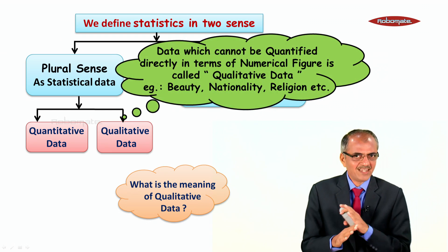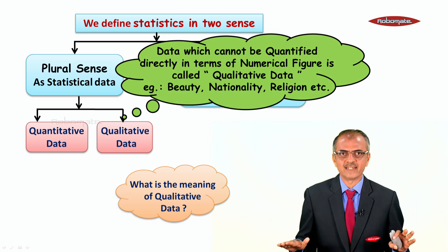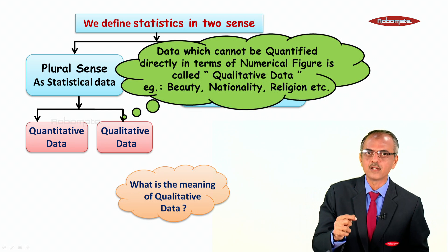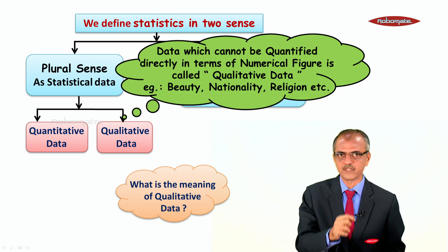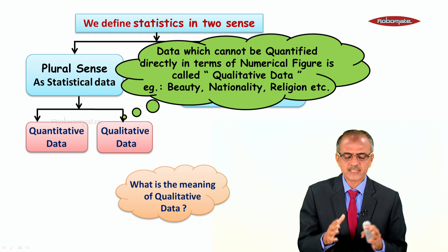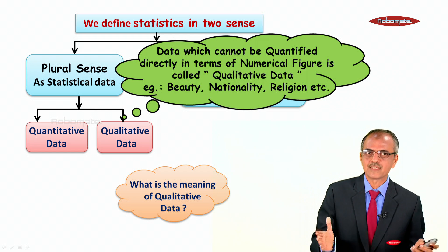What is the meaning of qualitative data? Data which cannot be quantified directly in terms of numerical figures is called qualitative data. Examples include beauty, nationality, religion, etc.